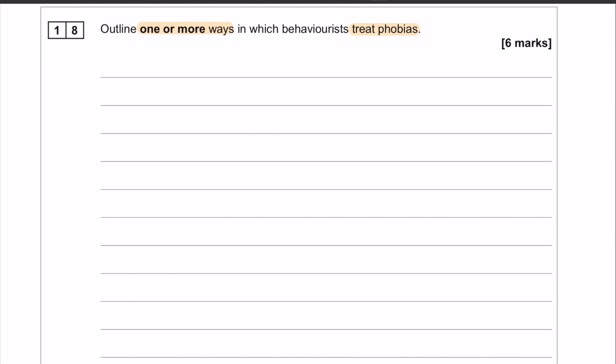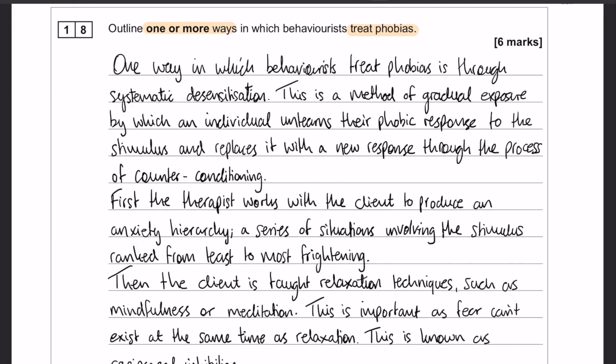So this is what my answer is going to look like. So let's go through it. First off, we have our little introduction of systematic desensitization, which is just a sentence about what it is. So it is a method of gradual exposure, and it works by unlearning the phobic response, and replacing it with a new response. And that is done through counter conditioning.